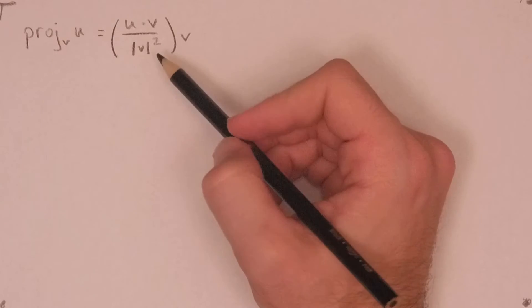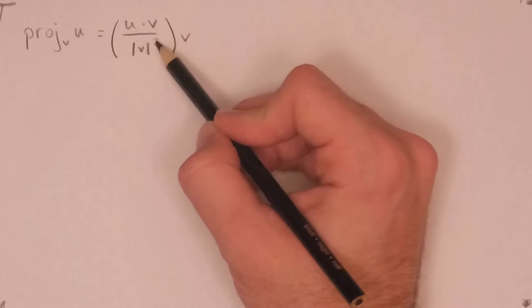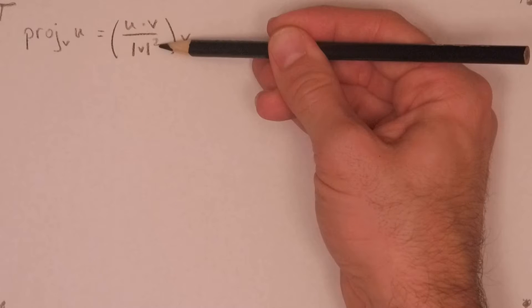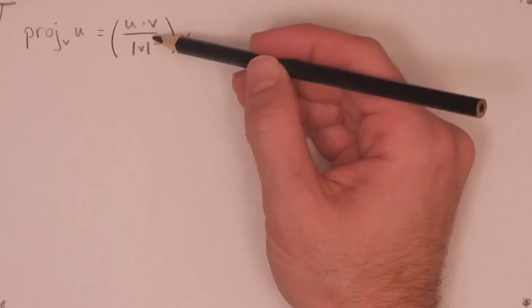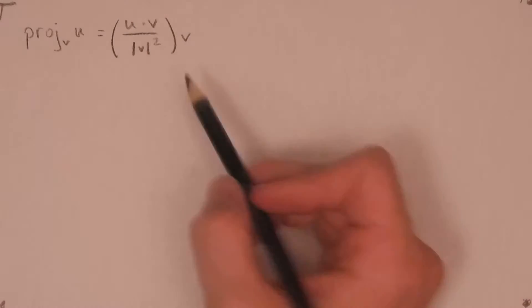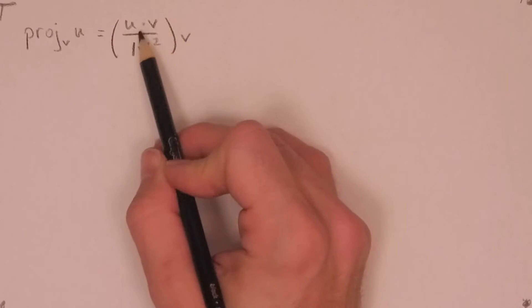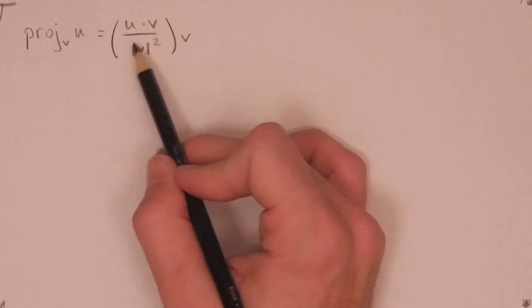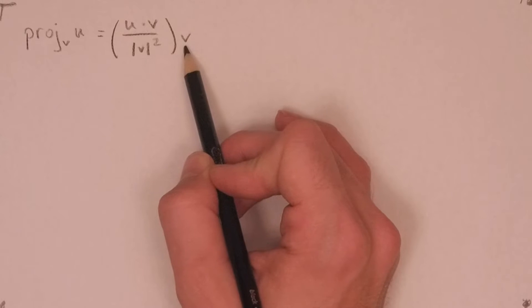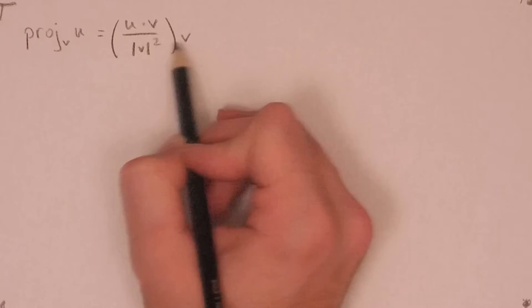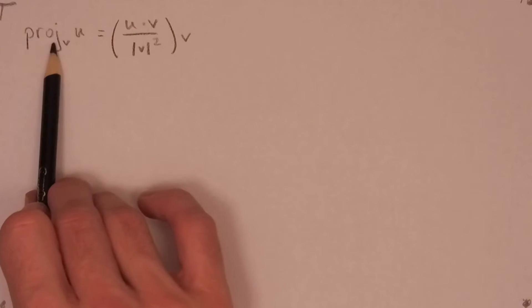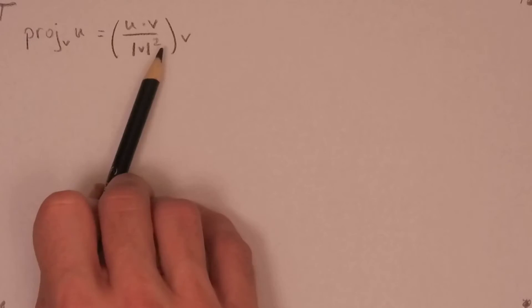And here in this denominator, we're taking the magnitude of a vector, which we already know is a real number, and that's being squared. And so we have a real number over a real number, and so of course this quantity here is a real number. And so we have this real number being multiplied by a vector. And when you're multiplying a real number by a vector, we like to call it a scalar, and we call it that because it's affecting the scale of this vector. So we have a scalar and we have a vector. So it stands that the projection of u on v is a vector itself.